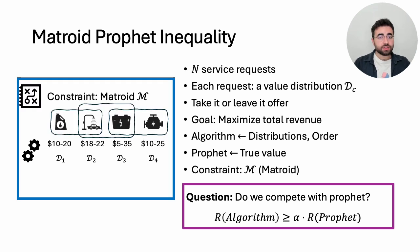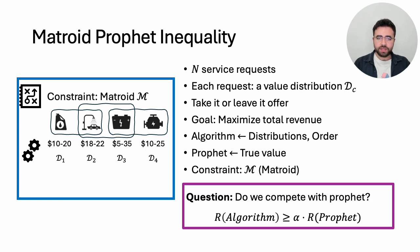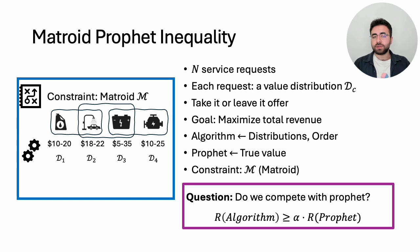Now let's generalize. Assume the auto shop offers other services like battery replacement, oil change, tire rotation, etc. Still n customers appear every day, the auto shop knows which type of service they want and their value distribution a priori. Now a subset of customer requests must be feasible.